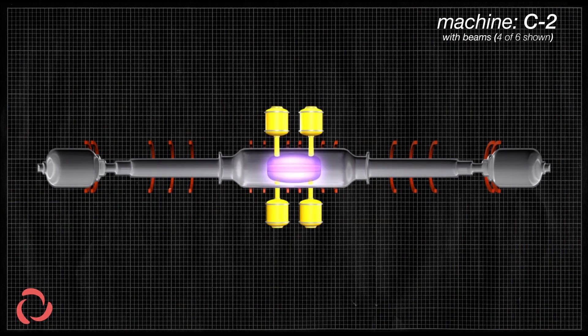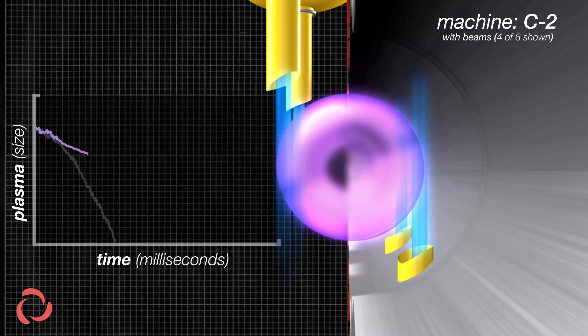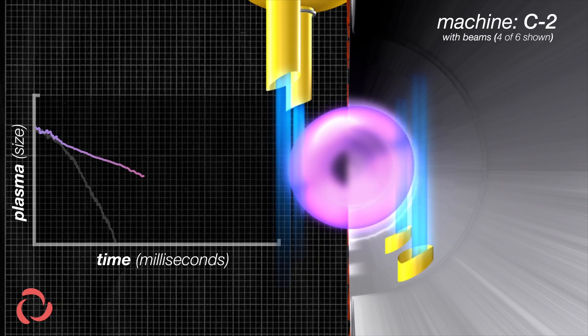In early experiments, the gas fell apart after just a couple of thousands of a second. But firing beams of high-energy particles helps keep it together.